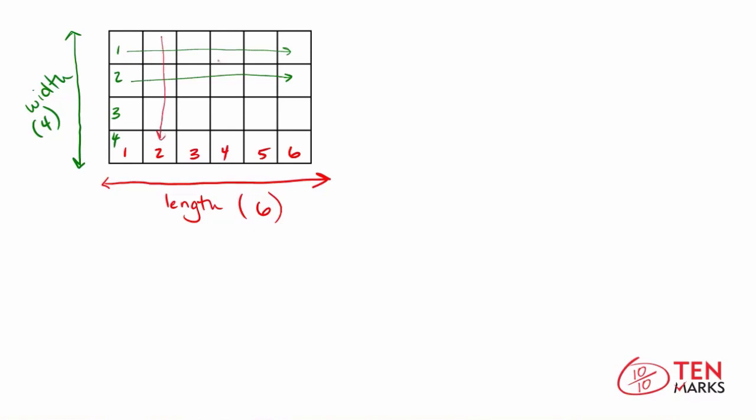Now what you can do is you can count six four times because there are six units in each of these rows. So six, six, six, and six.